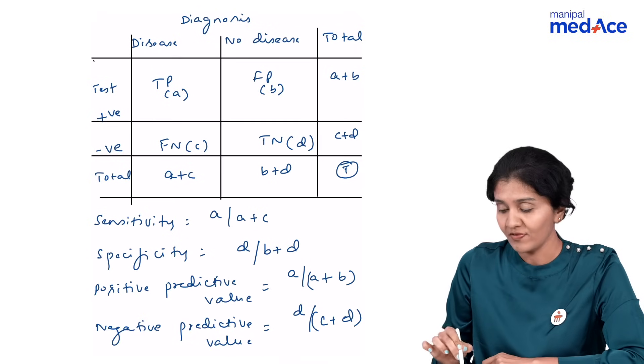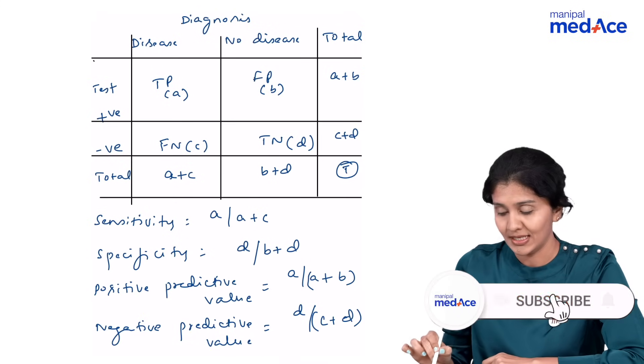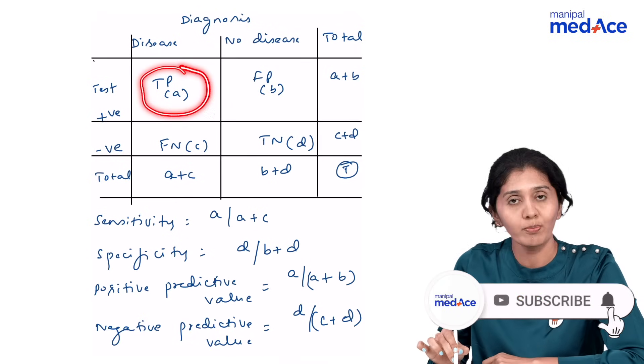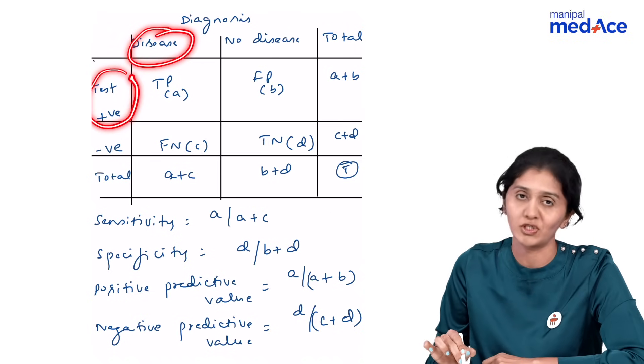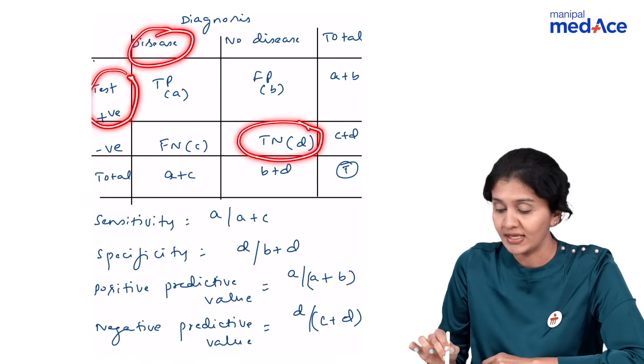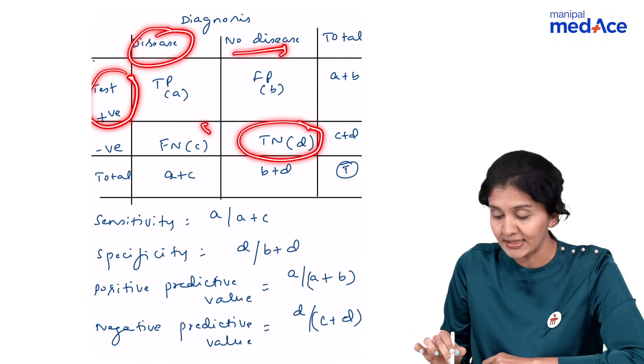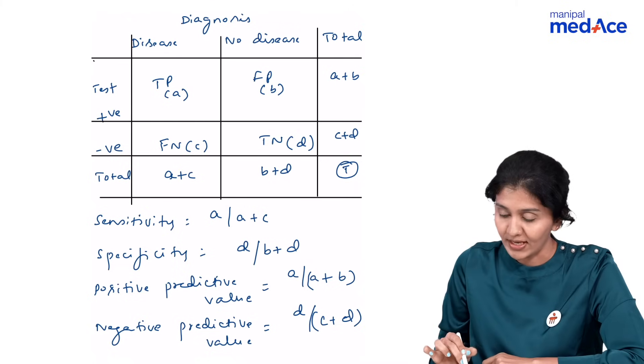This is the 2 by 2 table. We have 4 different cells A, B, C, and D. What is TP? True positive. The disease is present plus the screening test is also showing positive result. What is true negative? The disease is absent plus the screening test is also showing negative result.